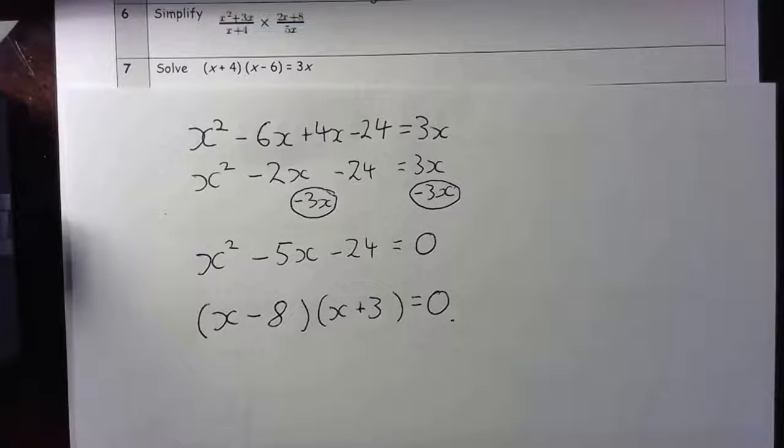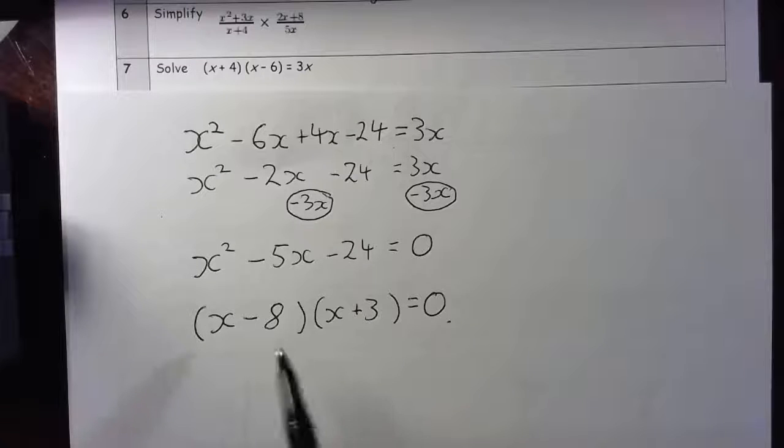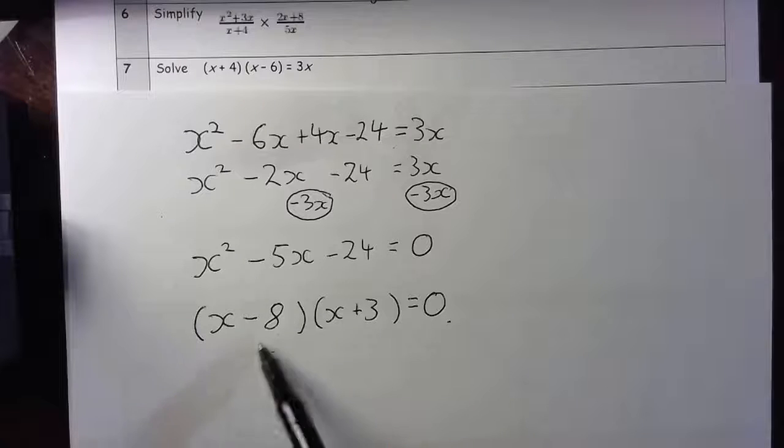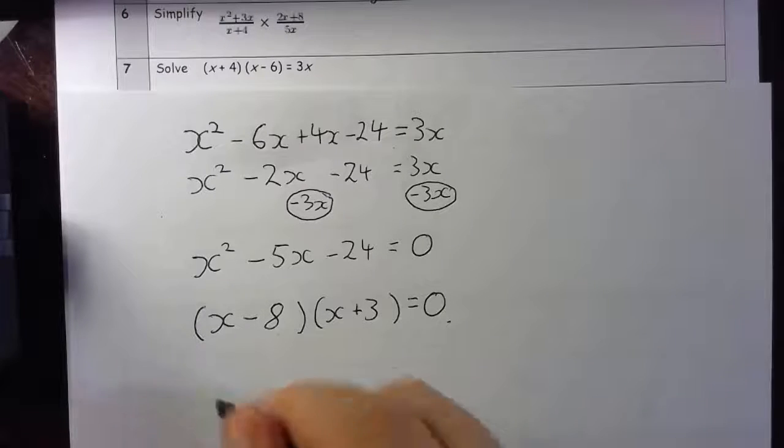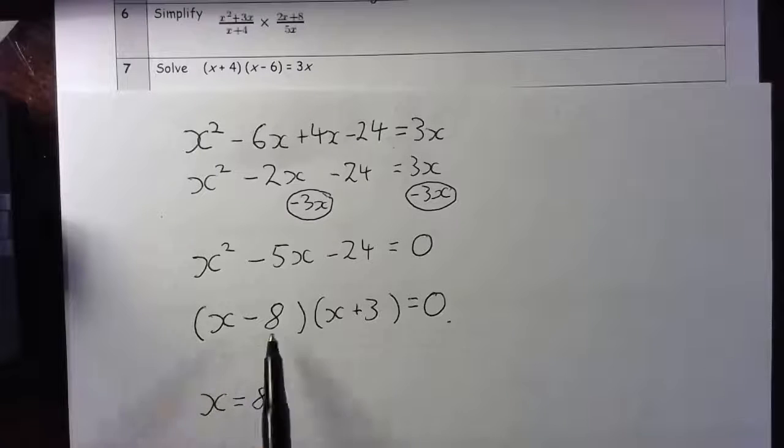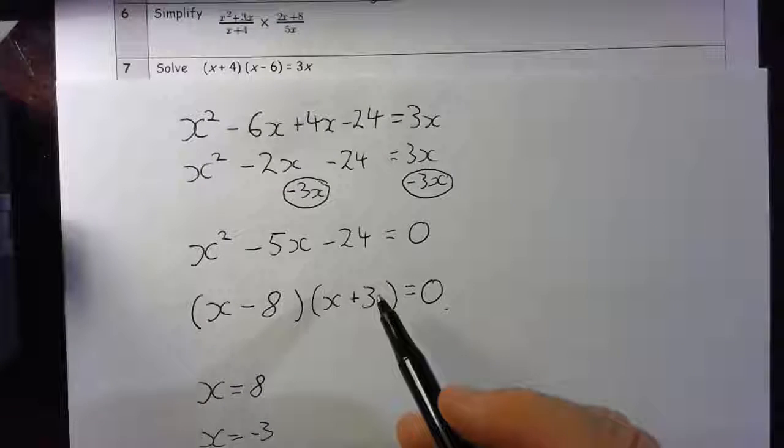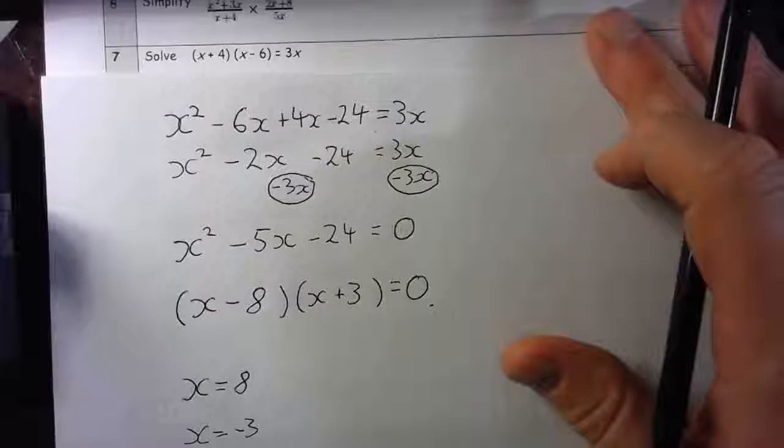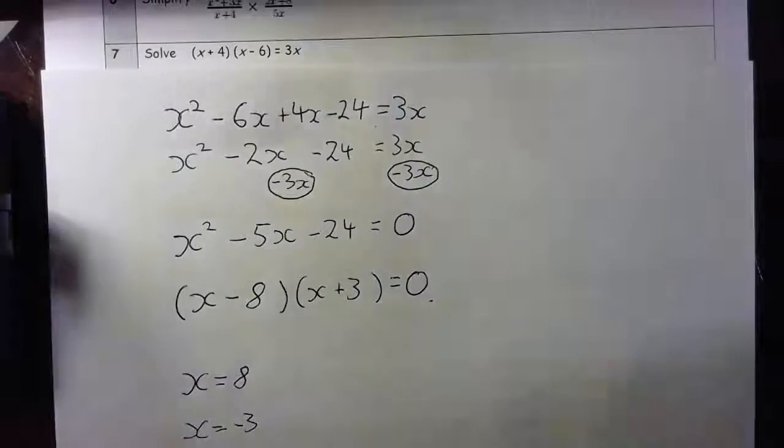Now the question asked me to solve this, so I need to think what value here would equal zero so when I times it by x plus 3 I get zero. So x could be equal to 8, because 8 take away 8 will give me zero. Or x could be equal to minus 3, because minus 3 plus 3 would be equal to 0. So those are my two solutions: x equals 8, x equals minus 3.